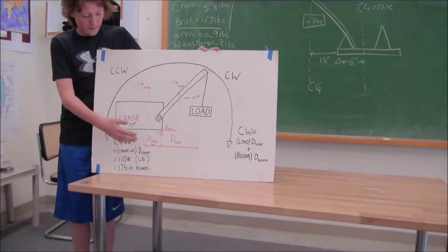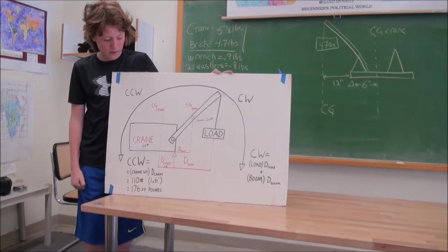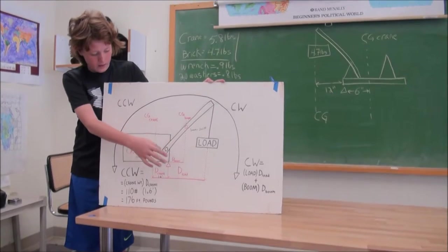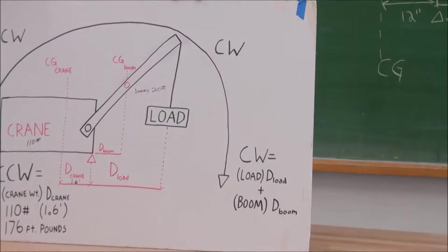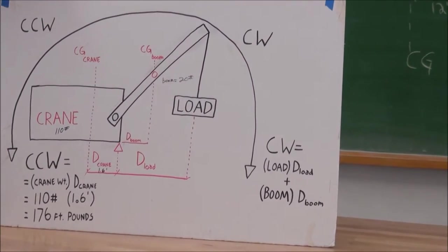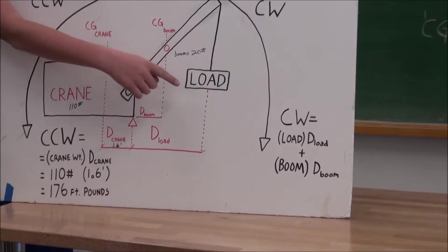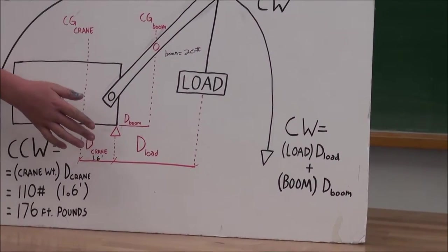This side of the pivot point is 176 foot pounds. And then there's going to be two parts to this side of the crane. It's going to be the load and the boom because they have different weights. So it's going to be the weight of the load and then find the distance from the center of gravity of the load to the pivot point and multiply those to get part of it.